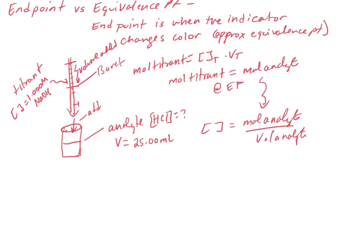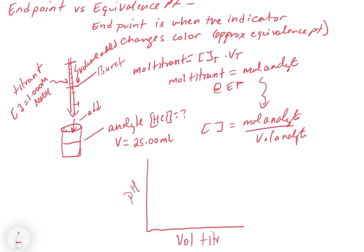A titration curve is going to look something like this: pH is on the left axis and volume of titrant is on the bottom axis. We're going to look at this titration curve in the next video and explain where it comes from. We'll draw it better there, but you can see we're tracking pH as a function of volume of titrant. This should make sense — we're adding base so the pH is going up as we add base. We're going to dissect this titration curve in the next video.